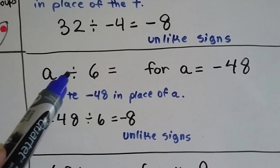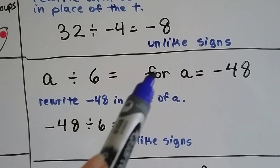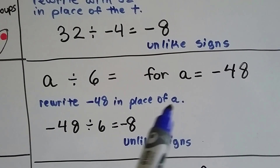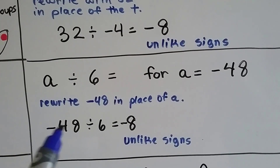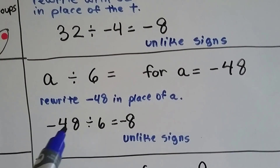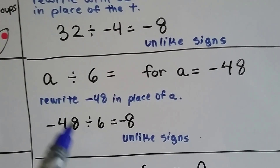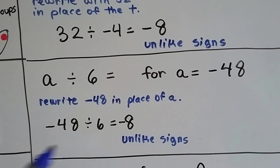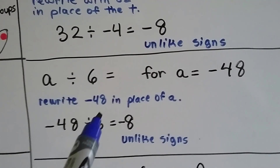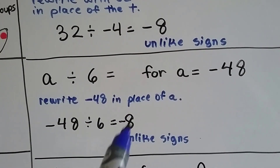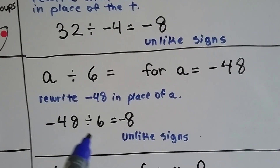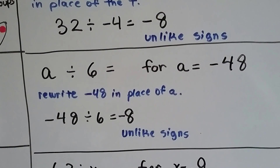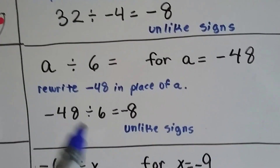If it says a divided by 6, for a equals negative 48, we just rewrite it as negative 48 divided by 6. We ask what is 48 divided by 6 — you could even use the inverse and say 6 times what is 48? That's 8. Since this is a negative and that's a positive, the answer is going to be negative 8 because they're unlike.